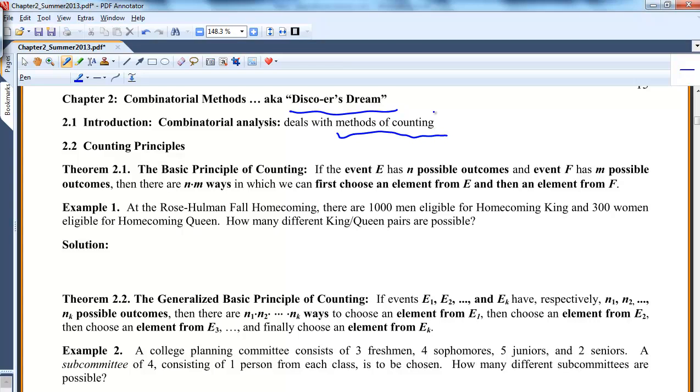In 2.2, we have a few principles. They're pretty obvious, but we still state them. The Basic Principle of Counting says if event E can happen in N possible ways and event F can happen in M possible ways, then there are N times M ways we can pick an element from E and then an element from F.